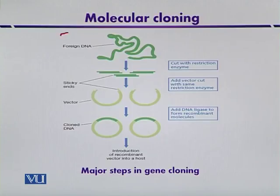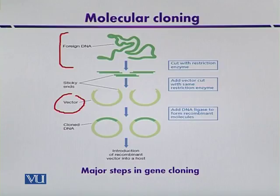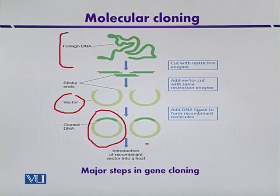The strategy for gene cloning begins with the source DNA — here the genomic DNA labeled as foreign DNA. It is fragmented by restriction enzymes, and then the vector, a suitable cloning vehicle such as a plasmid, is also digested with the same restriction enzyme to produce sticky ends — single strands of the double helix. The next step is ligation, after which the recombinant vector is ready for introduction into a host.